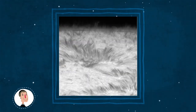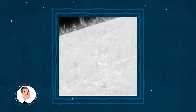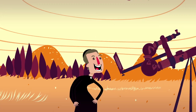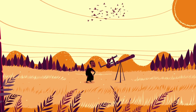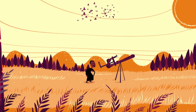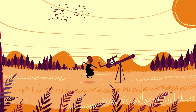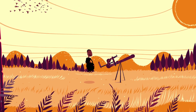Es wird angenommen, dass es zu jedem Zeitpunkt Hunderttausende von Spikulen überall auf der Sonne gibt. Pater Secchi beschrieb diese Strukturen 1877 und nannte sie Prateria Ardente oder Brennendes Feld. Heute werden sie als Spikulen bezeichnet – das Wort stammt aus dem Italienischen und bedeutet kleine Zacken.